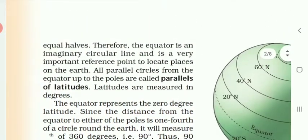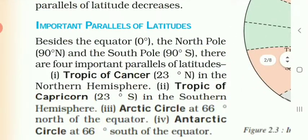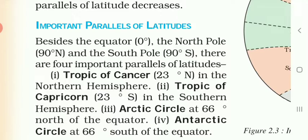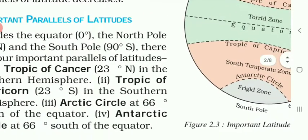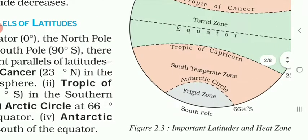Now we are going to see the four important parallels of latitude. Besides the equator at 0 degrees, the north pole at 90 degrees north, and the south pole at 90 degrees south, there are four important parallels of latitude. These are the Tropic of Cancer, the Tropic of Capricorn, the Arctic Circle, and the Antarctic Circle.